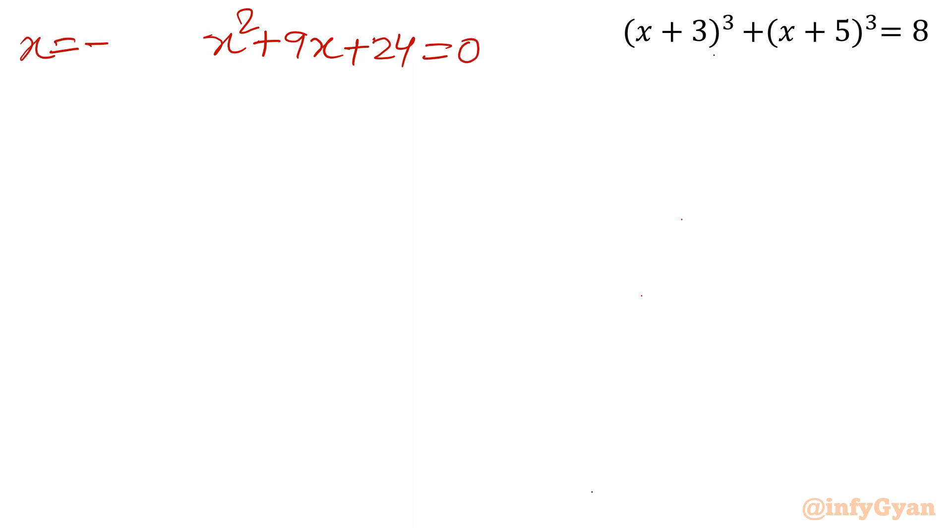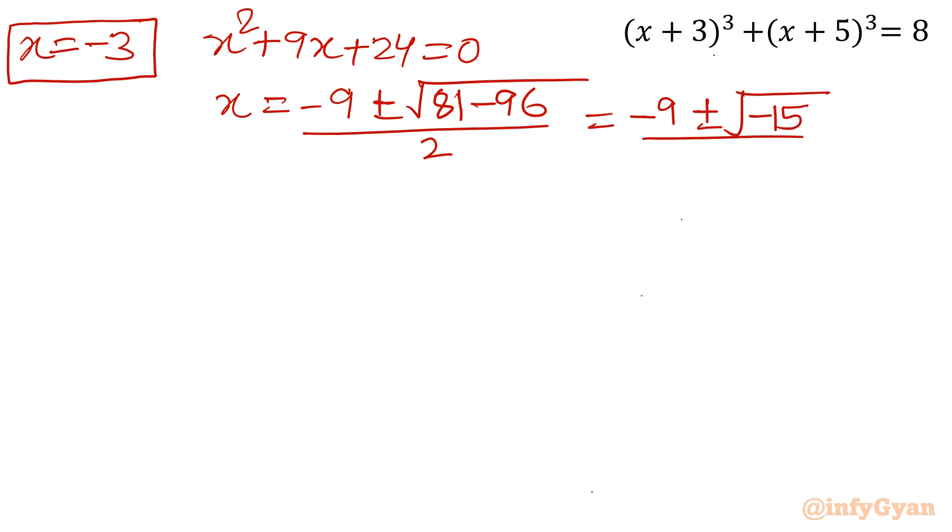This is we need to solve. x is equal to minus 3 is confirmed solution. So let's find out the solution. x is equal to minus 9 plus minus square root of 81 minus 96, 4 times 24 over 2. See, it is coming out complex, which we can verify from the first solution also.